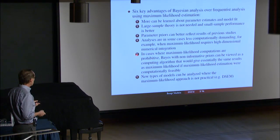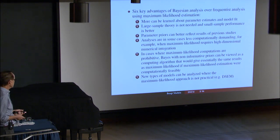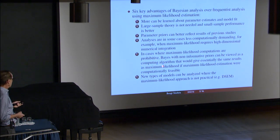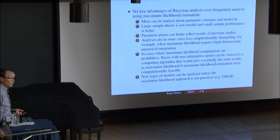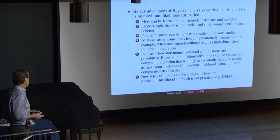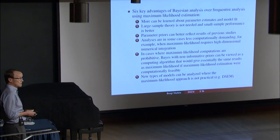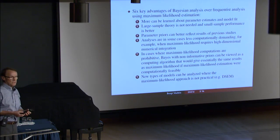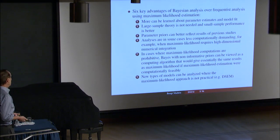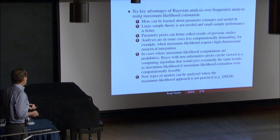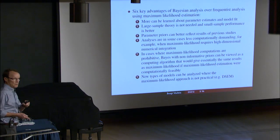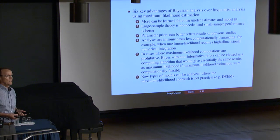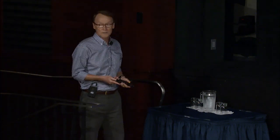Bayes is not inhibited at all by the number of dimensions. Maximum likelihood becomes impossible in many cases, and Bayes can then be looked at as a computing algorithm that would give essentially the same results as maximum likelihood if ML was computationally feasible. So in large samples, with Bayes using non-informative priors, you would get almost the same result with Bayes as with ML if you could compute it. This means new types of models can be analyzed with Bayes that were impossible for ML — and DSEM, the topic of today and tomorrow, is a very good example. Some DSEM models without random effects can be done by ML, but not the general ones.